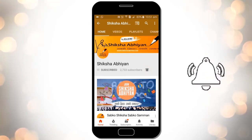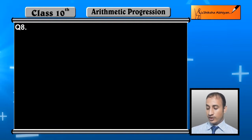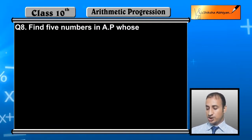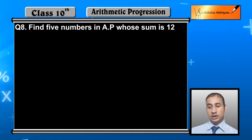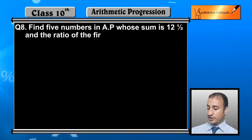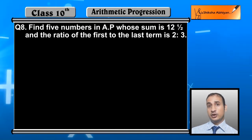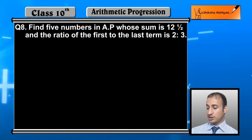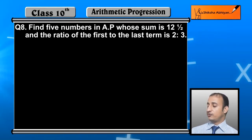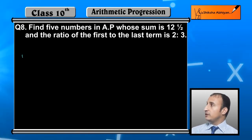The next question is: find the five numbers in arithmetic progression whose sum is 12 and a half, and the ratio of the first to the last term is 2 is to 3. हमें five numbers लेने हैं arithmetic progression में जिनका sum 12 and a half हो and first and last term का ratio 2 is to 3 हो।